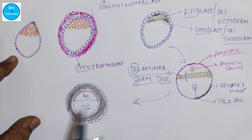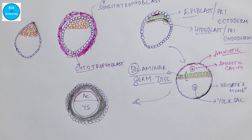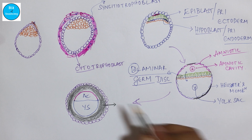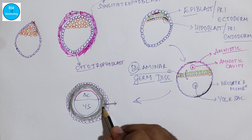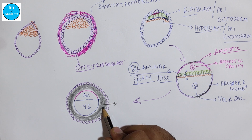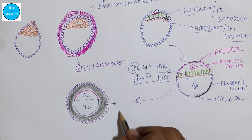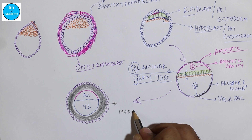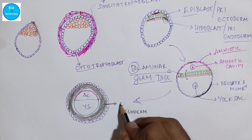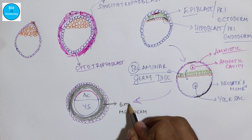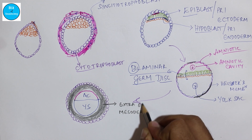This layer secreted from the cytotrophoblast and present outside the embryo — if you see its composition, it contains mainly connective tissue or mesenchymal tissue. That is why it is called the mesoderm layer, and since it is present outside the embryo, it is called extra-embryonic mesoderm.